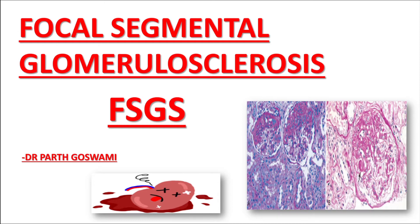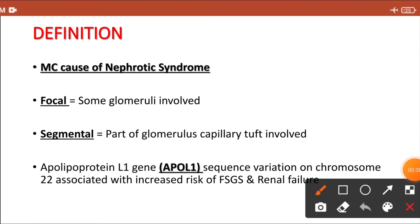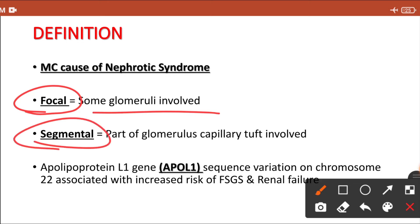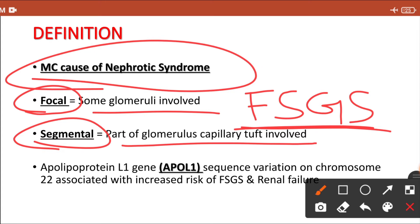You need to understand what nephrotic syndrome is, so see my previous lecture first. As far as the definition of focal segmental glomerulosclerosis is concerned, the name itself suggests: focal means only some glomeruli of the kidney are involved, and segmental means in one glomerulus only a part is involved. It is one of the most common causes of nephrotic syndrome overall.